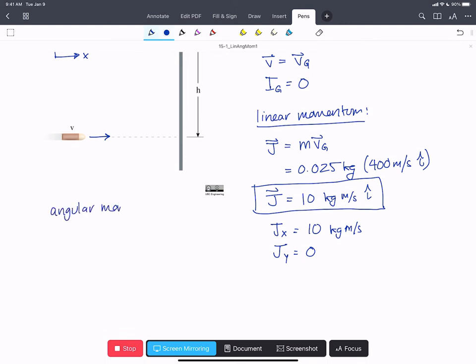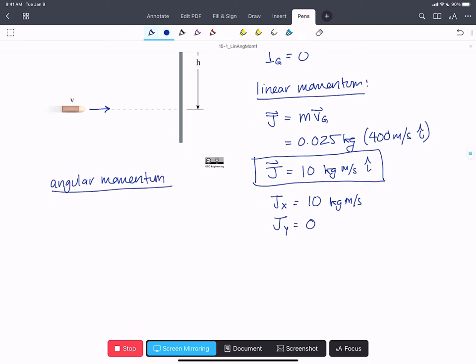So in angular momentum, we note that the angular momentum K about the bullet center of gravity, that would be IG omega. We know it has no extent, so it has no mass moment of inertia or resistance to rotation. So this is going to be 0.